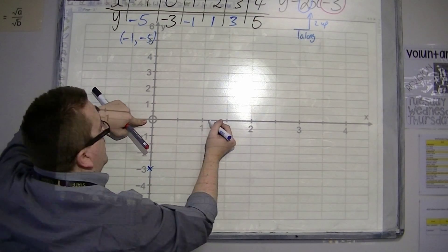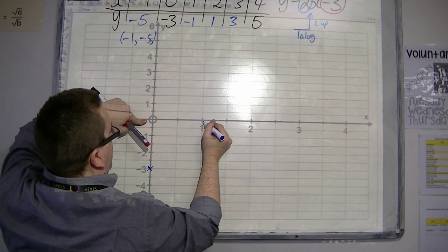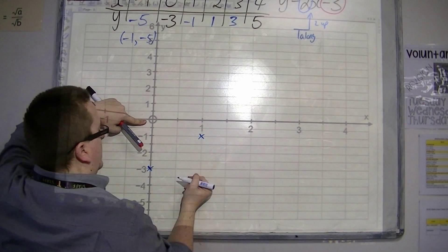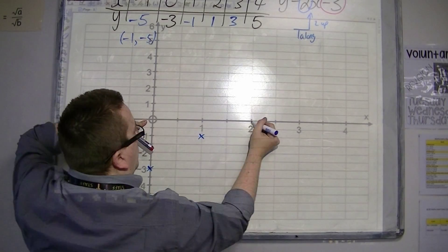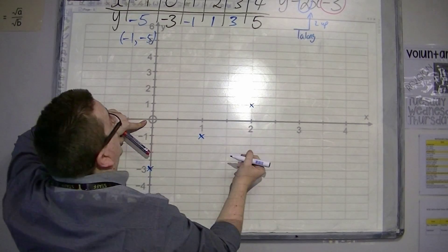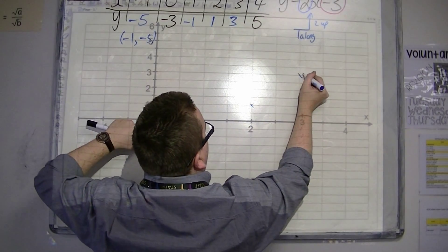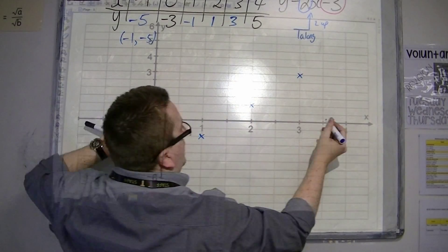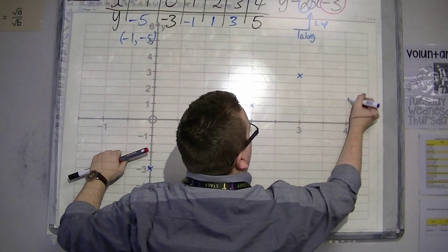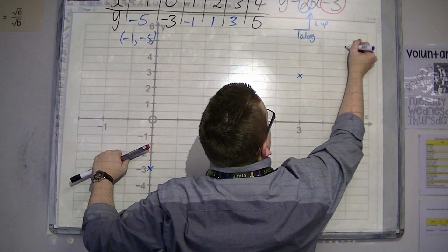Then I've got 1, minus 1. Then I've got 2, 1. Then I've got 3, 3. And then I've got 4, 5.